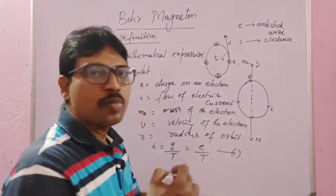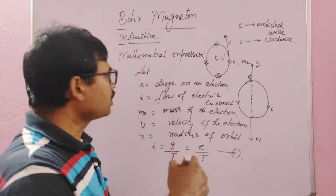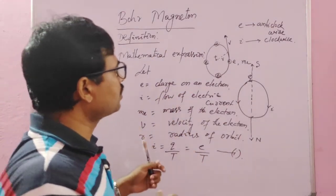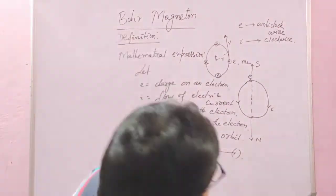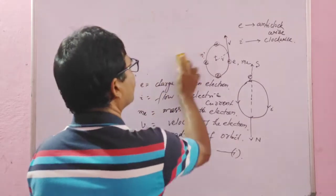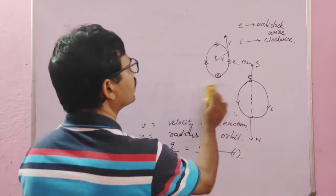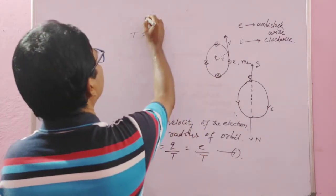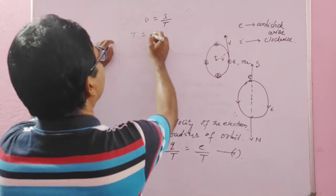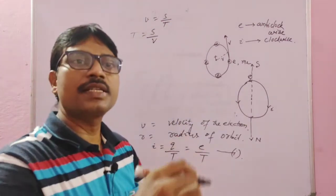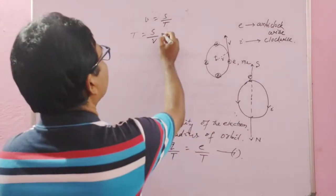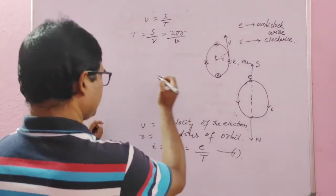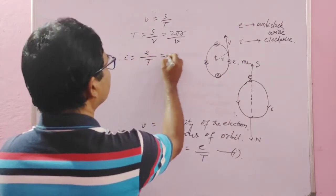When the electron revolves in a circular orbit, the current produced is I = e/t. Now, how much time is taken by the electron for one complete rotation? The velocity v = s/t, so t = s/v. The distance s is the circumference of the circle, which is 2πr. Therefore t = 2πr/v. Substituting into the current equation, I = e/t = e/(2πr/v).